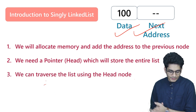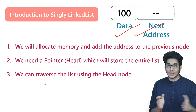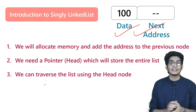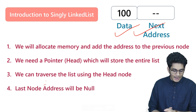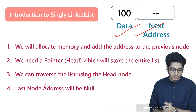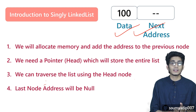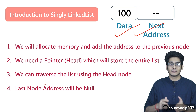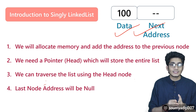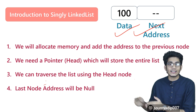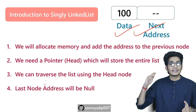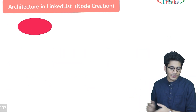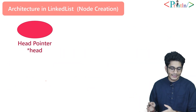We can traverse the list using the head node. The last node's address will be null. So for traversal, the terminating condition is null — whenever we hit null we terminate the loop. For an array we have the size; for a linked list the terminating condition is null.